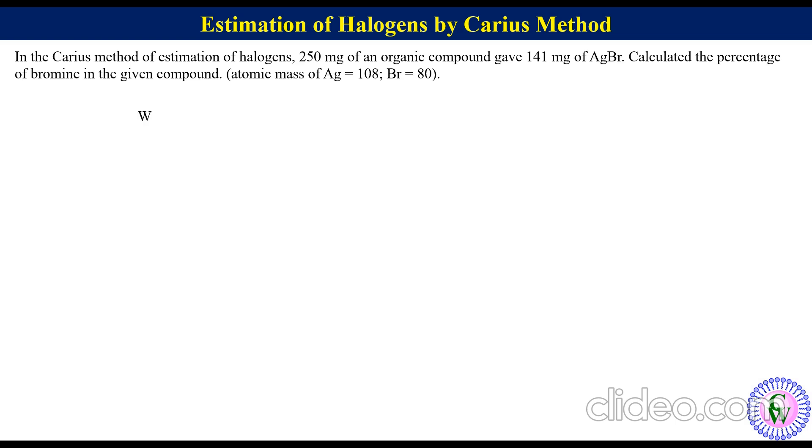Given that mass of sample capital W is equal to 250 mg. Mass of AgBr small w is equal to 141 mg. Molar mass of silver is equal to 108 and molar mass of bromine is equal to 80. So molar mass of AgBr is equal to 108 plus 80, is equal to 188.